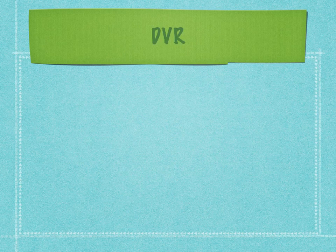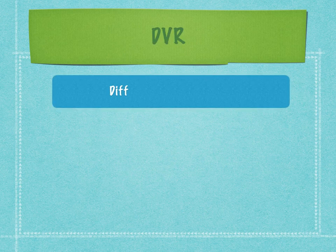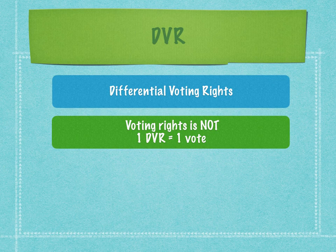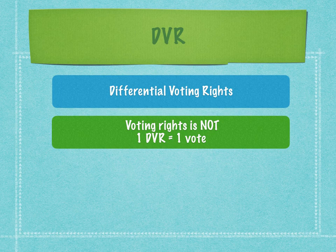Differential voting rights are stocks where the voting right is not at parity. Parity means one DVR equals one vote, but in the case of DVR, one DVR is not equal to one vote — multiple DVRs equal one vote. Therefore, at an AGM the voting power of a DVR holder is much reduced compared to a common stockholder. This is the most critical point in understanding the differences between a DVR and a common stock.